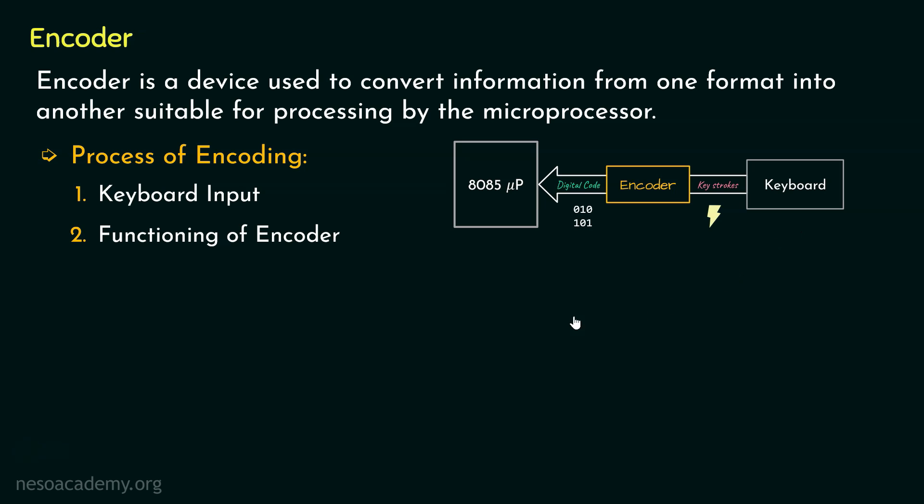Next part in the processing encoding is the interfacing with the microprocessor. Here, the encoded digital output from the encoder is then fed to the input ports of the 8085 microprocessor, usually via the addressable input output ports or parallel input ports. These ports of the microprocessor allow the processor to receive the digital data from the keyboard encoder.